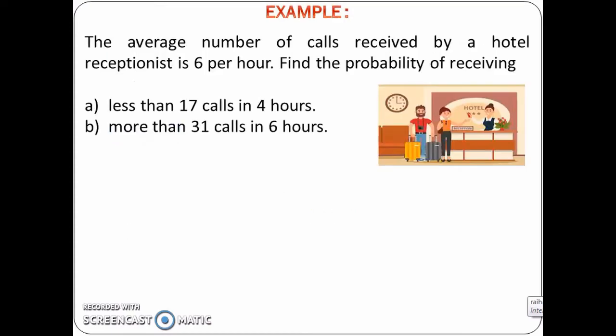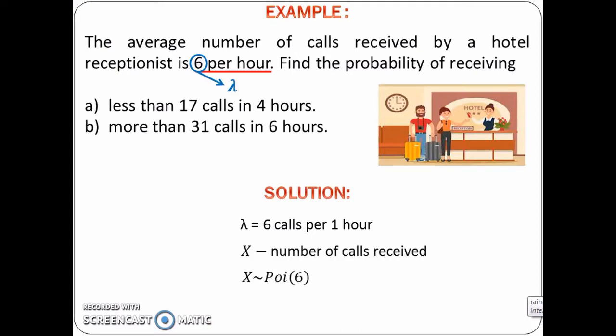Let's look at an example. The average number of calls received by a hotel receptionist is 6 per hour. Find the probability of receiving: (a) less than 17 calls in 4 hours, and (b) more than 31 calls in 6 hours. To solve this problem, first take out the lambda value from the question, then define a variable x as the variable of interest, which is the number of calls received.